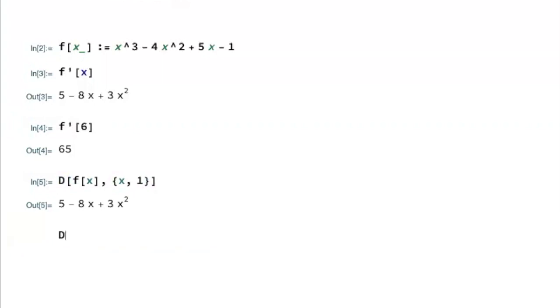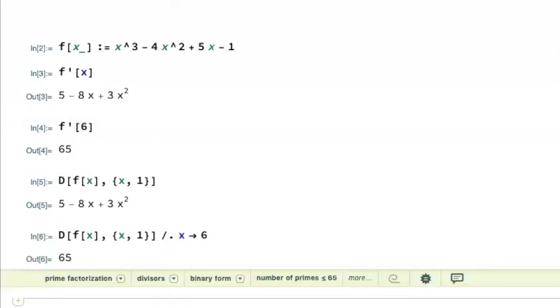To use the D command to evaluate a derivative at a specific value, you begin the same way, and then outside of the D command, you use forward slash dot x arrow, and you put the particular value you want to evaluate this function at. And again, you can see I got the same result. It's a lot more typing to do it that way, but it is an option.